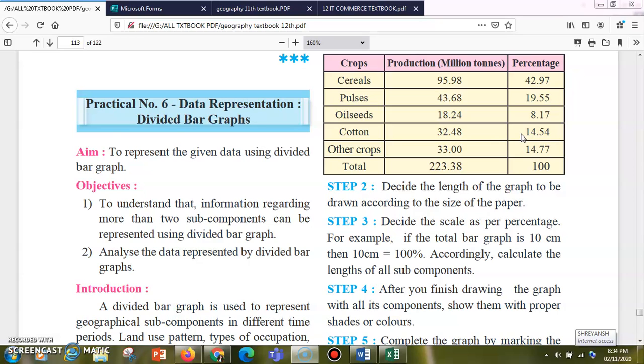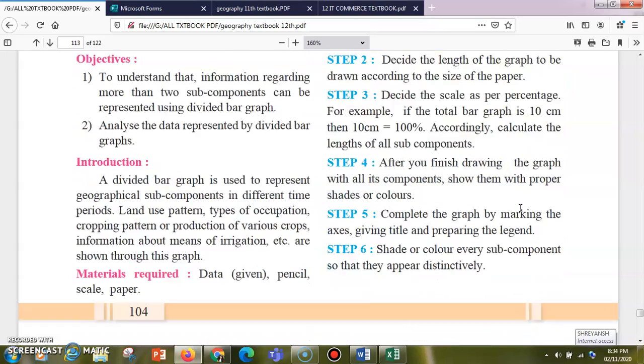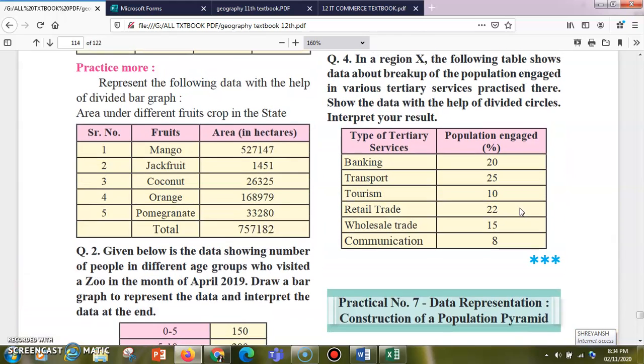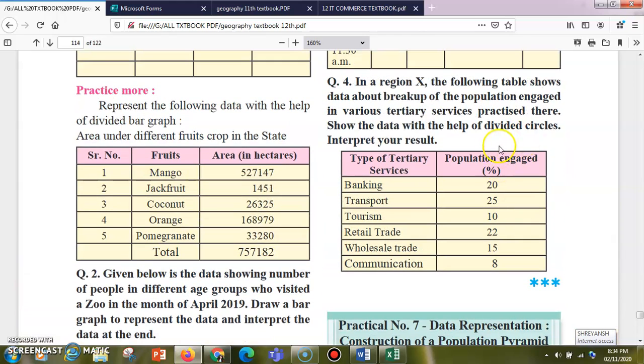First three examples are already solved in the first video. In example number four, in a region X, the following table shows data about breakup of population engaged in various tertiary services practice. Show the data with the help of divided circle and interpret your result.